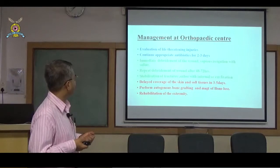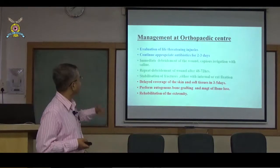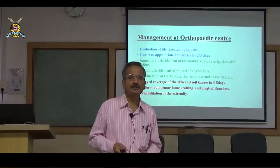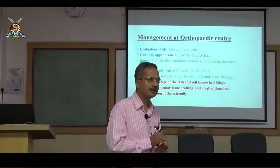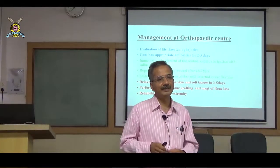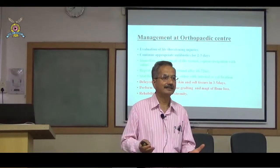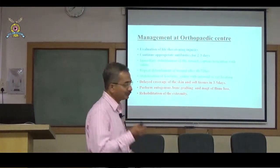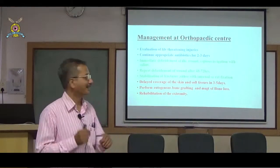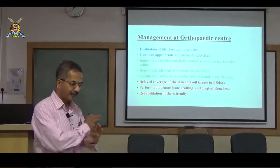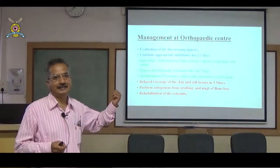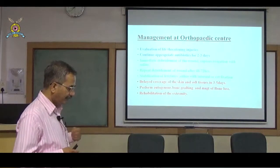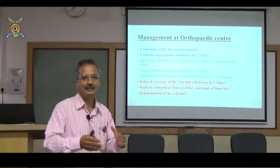Steps at the tertiary center: perform debridement; if crushing is extensive, repeated debridement every 2-3 days until healthy tissue is visible; then stabilize the fracture with external or internal fixation. For Type III wounds where closure is difficult, leave the wound open and cover with skin graft or flap between 3 to 5 days.